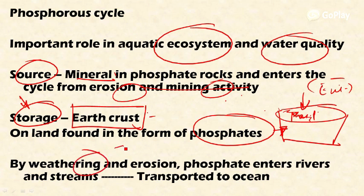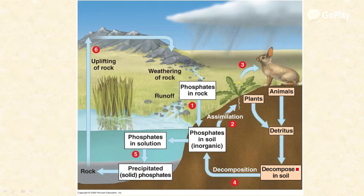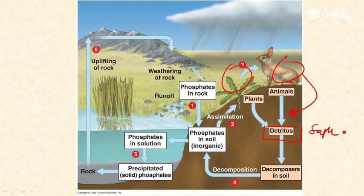Weathering on the surface of phosphate rocks leads to the wearing away of certain portions, which are then carried through erosion. These phosphates enter rivers and streams and are transported to oceans. In this way the phosphorus cycle is initiated. Plants and animals after death undergo decomposition — the detritus organisms called saprophytes, including fungi, bacteria, algae, and other microorganisms along with earthworms, decay the organic matter.